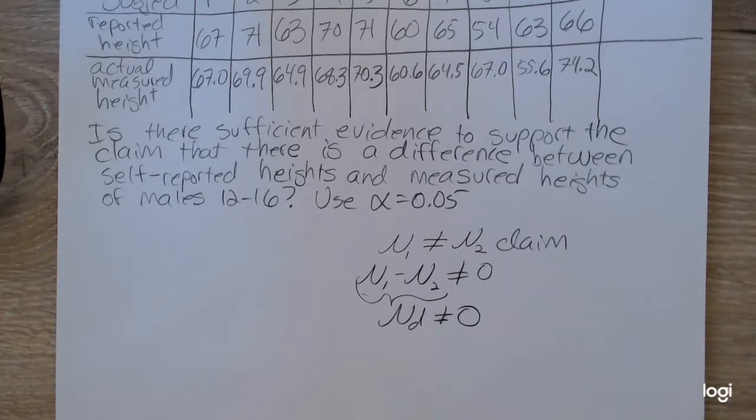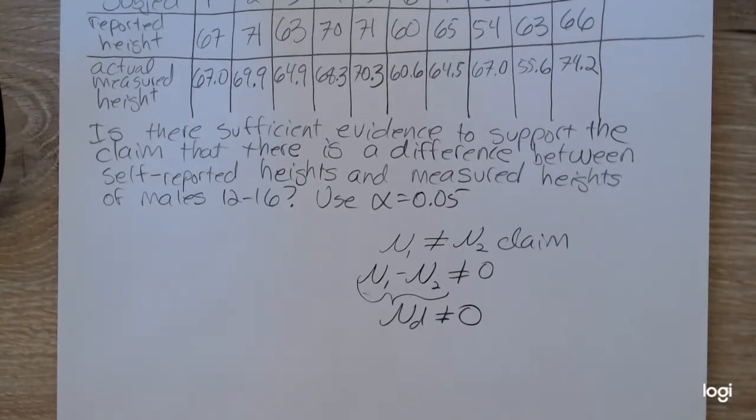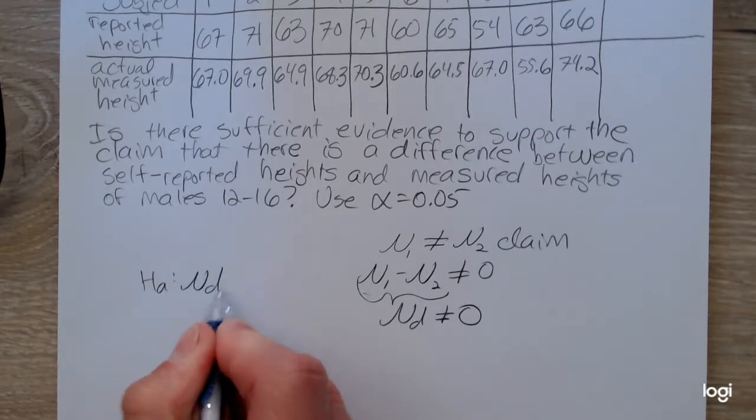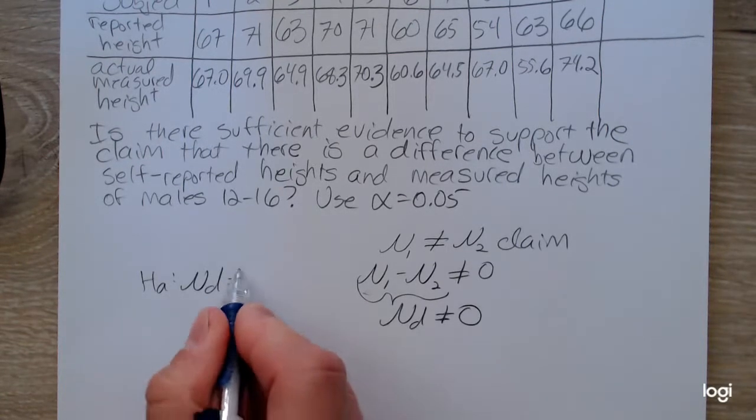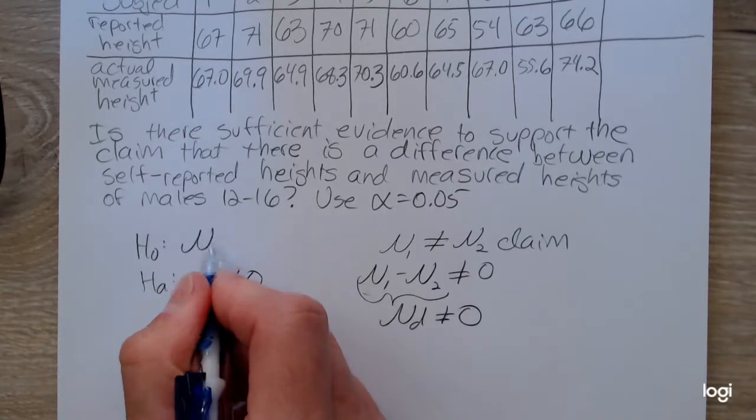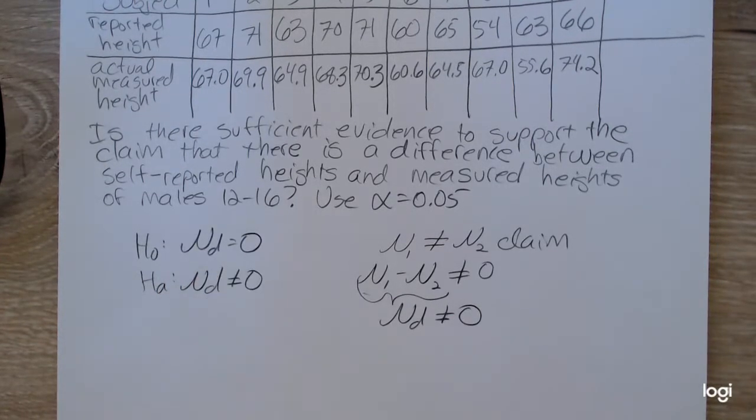Because this does not contain the case of equality, this is the alternative. The alternative is mu sub d is not equal to 0. The null in this case will be mu sub d is equal to 0. Again, the alternative is the claim.